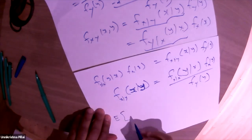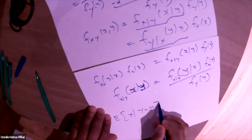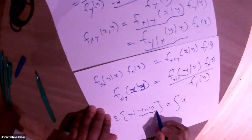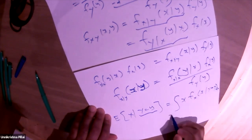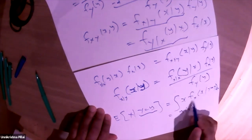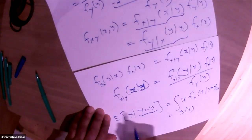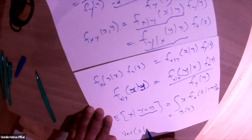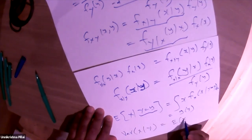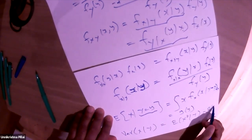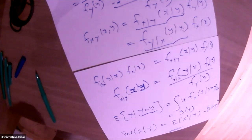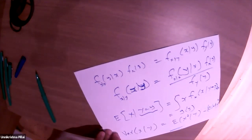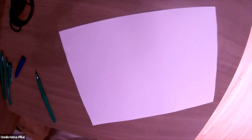The conditional mean of X given Y = y is E[X|Y=y] = ∫ x · f_{X|Y}(x|y) dx, which turns out to be some function of y. Similarly, the conditional variance is E[X²|Y=y] − (E[X|Y=y])². The next homework asks you to find the conditional mean and variance.